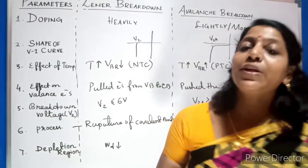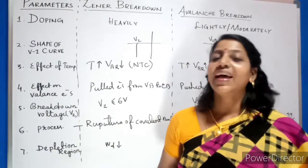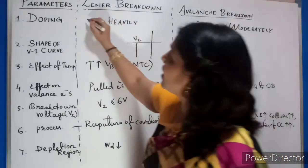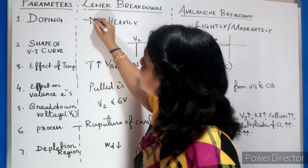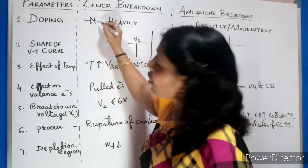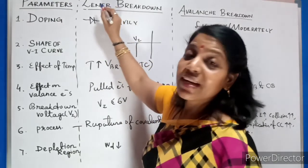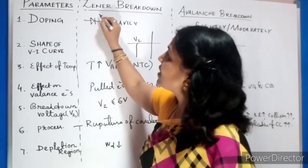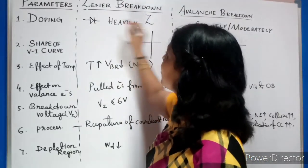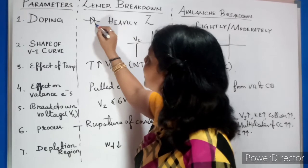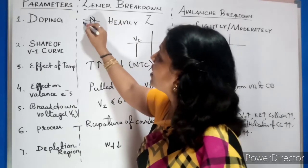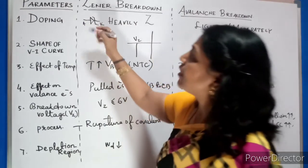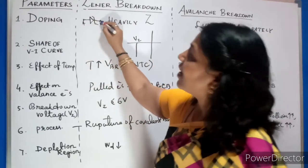I hope you now have clarity between Zener breakdown and avalanche breakdown. Regarding the symbol of the Zener diode: a normal diode has a standard symbol, but the Zener diode was invented by scientist C. Zener, so the symbol resembles the letter Z — it has a bent cathode bar. It still has an anode and a cathode, but this bent symbol is the standard representation of the Zener diode.